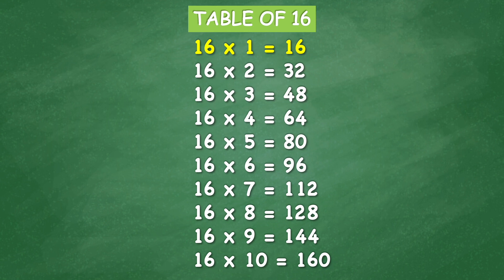Table of 16: 16 times 1 equal 16, 16 times 2 equal 32, 16 times 3 equal 48, 16 times 4 equal 64, 16 times 5 equal 80, 16 times 6 equal 96, 16 times 7 equal 112, 16 times 8 equal 128, 16 times 9 equal 144.